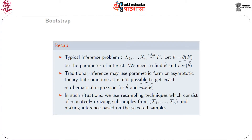Typically, in an inference problem, we have x1, x2, ..., xn as n iid samples taken from a distribution f, and we are interested in the parameter theta, which is theta of f. Let theta-hat be the estimator of theta. We are interested to find theta-hat and the variance of theta-hat, that is the estimate of the variance of theta-hat. In traditional approaches, one uses parametric form or parametric theory to get a solution. Sometimes, however, it is not possible to get the exact mathematical expression for theta-hat and its variance. In such situations, we take recourse to resampling techniques.